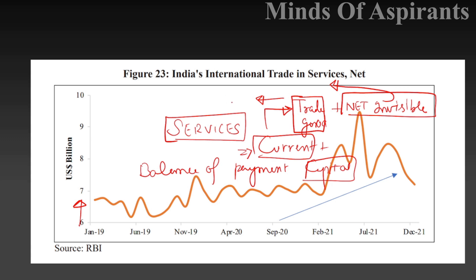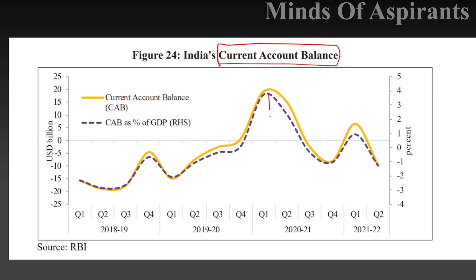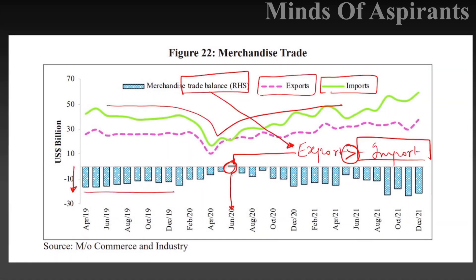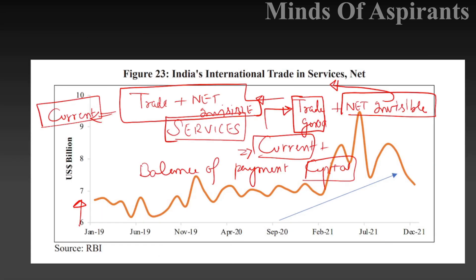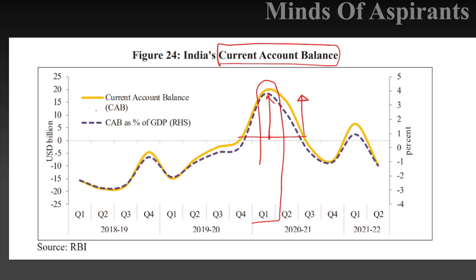Trade of goods plus net invisibles constitute the current account deficit. India usually has a negative trade balance, but the trade in services is usually positive — we export more services than we import. Usually the current account is in deficit form. There is one small period where it turned positive, shown in the graph, because imports dropped sharply during that time.